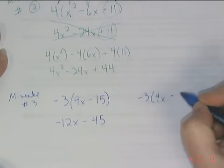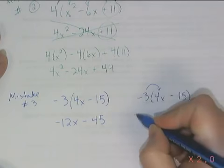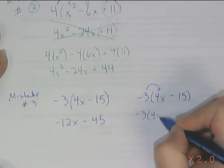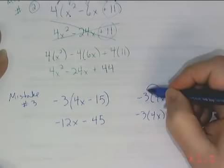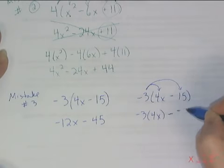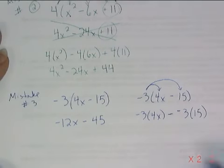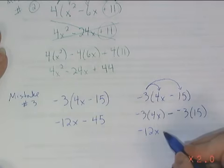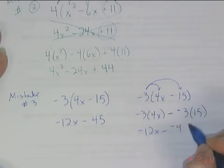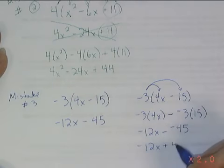If I'm going to multiply, using the same procedure I've done so far, I would need to multiply negative 3 times 4x, copy my subtraction sign, and then multiply negative 3 times 15. That is indeed equal to negative 12x, but I get minus a negative 45, which we know should be simplified to plus 45.